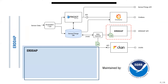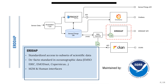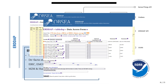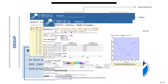Once we have our data ingested into our database and API, we export it and provide different services where users can access it. For instance, ERDDAP is a standardized service that provides access to subsets of scientific data and is a de facto standard because many aggregators use it, such as EMSO ERIC, EMODnet, and Copernicus. It has machine-to-machine interfaces but is also accessible by humans and is maintained by NOAA. Users can select datasets, parameters, variables, and time ranges, and even create graphs and export them in different formats.